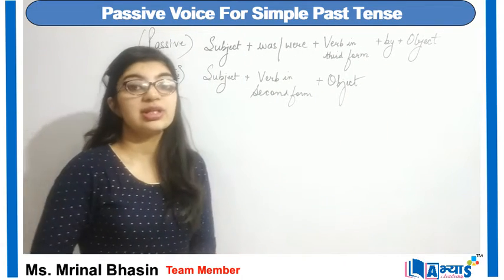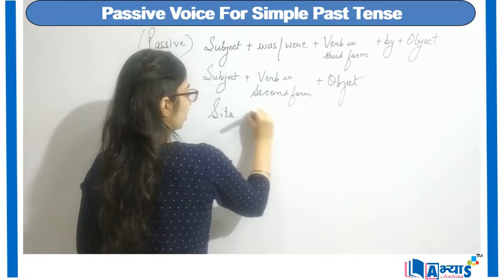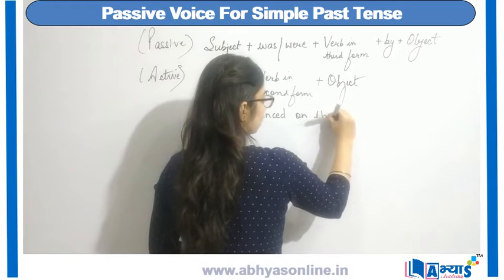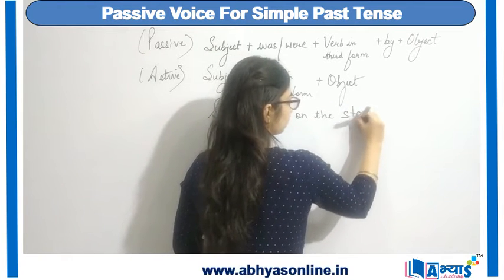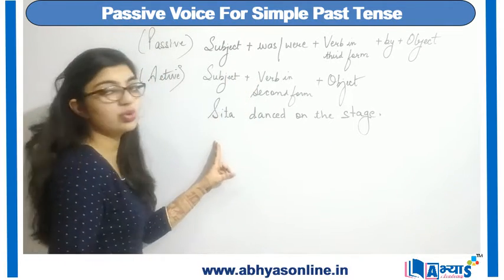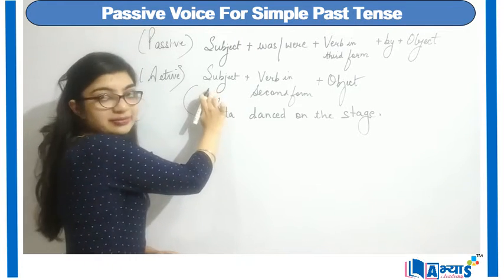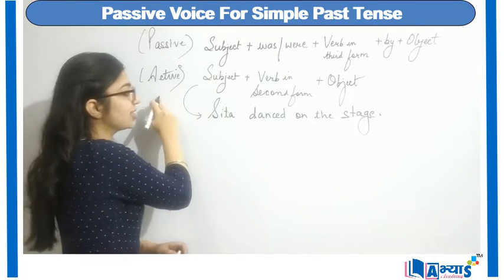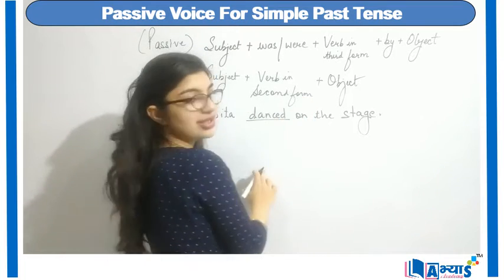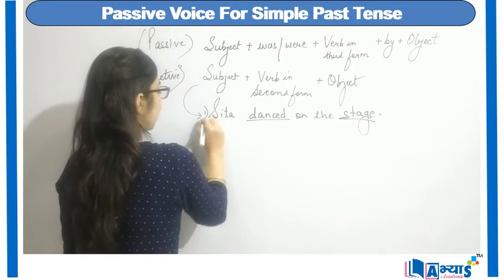For example, 'Sita danced on the stage' is the active form of a sentence because it matches the rule of active sentences. Sita is the subject, 'danced' is a verb in second form, and 'stage' is the object.